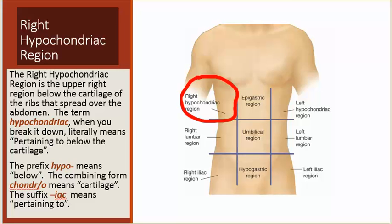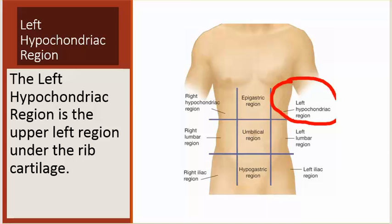The right hypochondriac region is the upper right region below the cartilage of the ribs that spread over the abdomen. The term hypochondriac, when you break it down, literally means pertaining to below the cartilage. The prefix hypo means below, the combining form chondro means cartilage, and the suffix -ac means pertaining to. The left hypochondriac region is the upper left region under the rib cartilage.